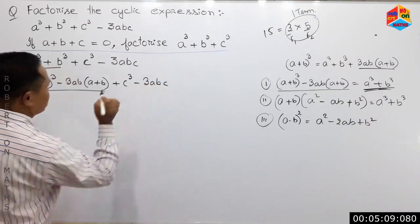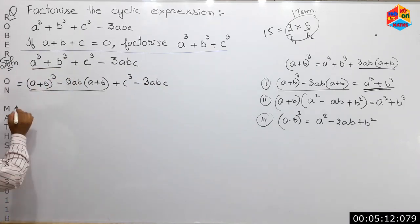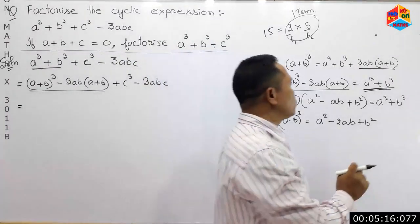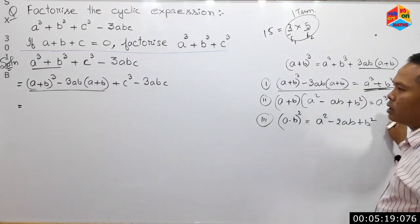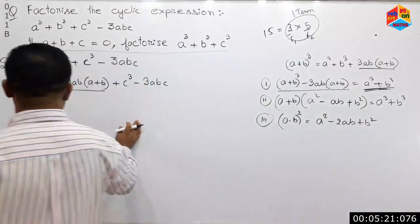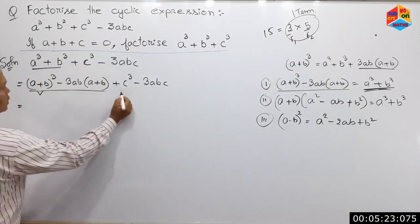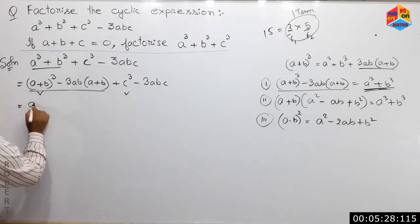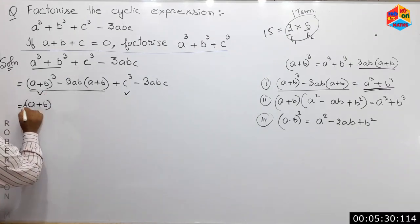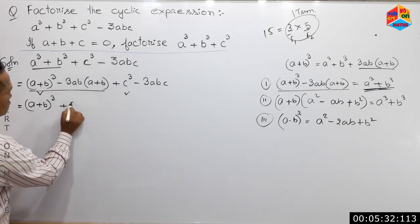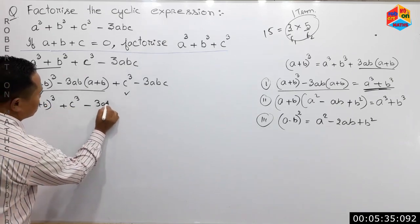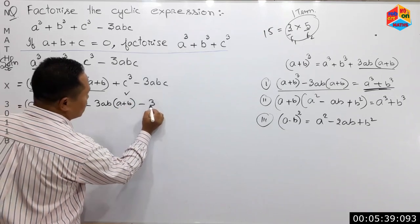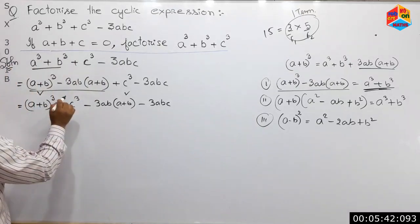A plus b whole cube plus c cube minus 3ab times (a plus b) minus 3abc — c is the length of it.